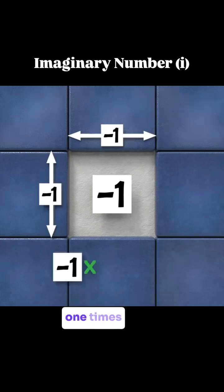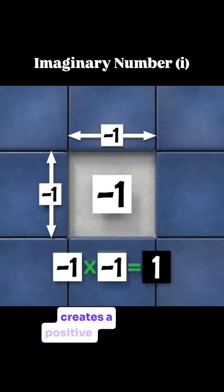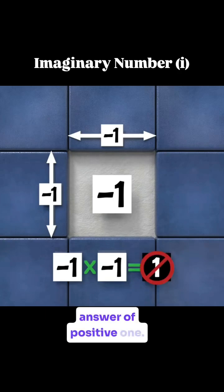If we considered the edges of the hole to be negative 1 unit in length, we'd end up with an area of negative 1 times negative 1, or negative 1 squared. A negative times a negative creates a positive value. So again, we'd get the wrong answer of positive 1.